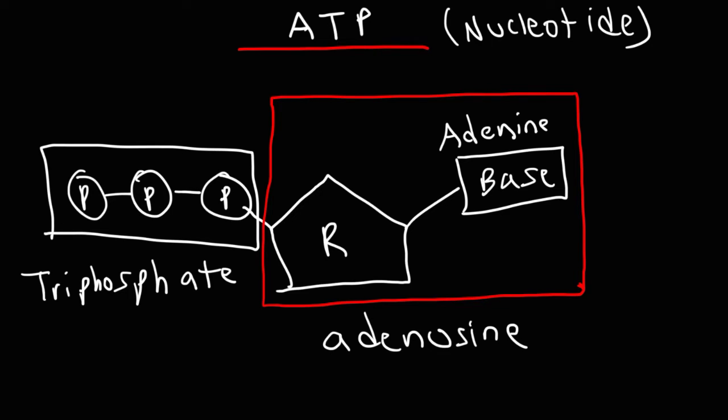Now ATP is the energy currency of all cells. Cells use the energy stored in ATP to power necessary activities such as driving endergonic reactions or actively transporting substances across cell membranes or just movement in general. And so ATP is very important. The cell uses it as a form of short-term energy storage.